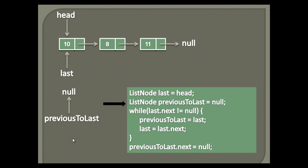Moving further, the third step is to execute a few steps in a while loop. The while loop executes till last node's next is equal to null. It simply means when last node's next becomes null, the last node variable points to the last node in the list. In the while loop, a check is made whether last's next is null or not. Currently, last node points to head, whose next points to the second node, which is not null.